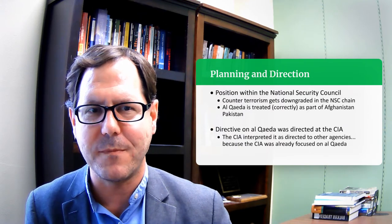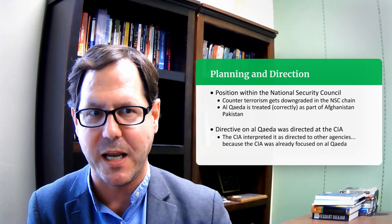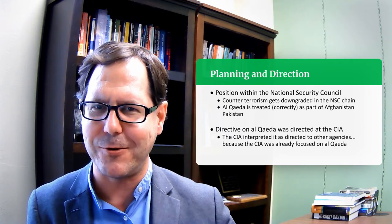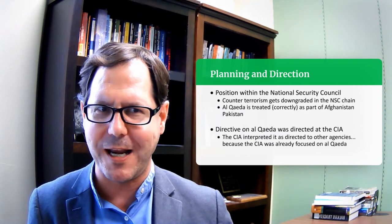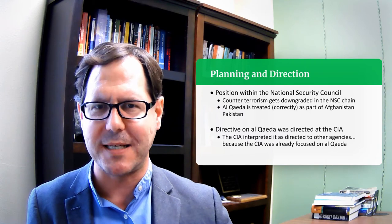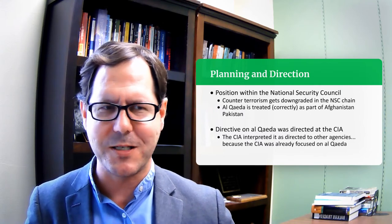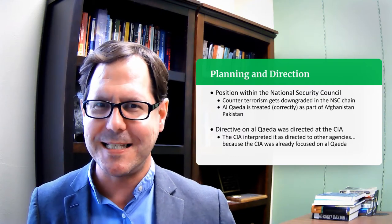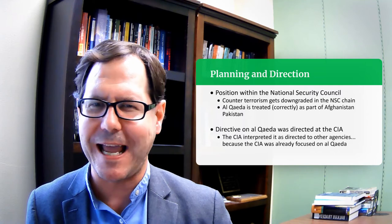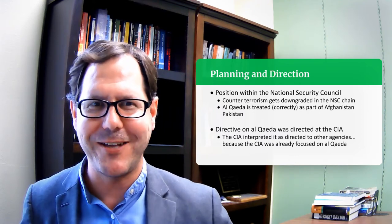In addition, with the planning and direction, Hastedt notes that there was a directive sent out to the intelligence community noting that Al-Qaeda was going to be a problem and to be vigilant. That directive was sent to the CIA; however, within the CIA it was interpreted as intended for the rest of the intelligence community, because the CIA felt it already had Al-Qaeda as a priority. So that direction piece seems to have been muddled in the overall bureaucratic chaos of the intelligence community, with various agencies and no central Director of National Intelligence to help facilitate more effective planning and direction.